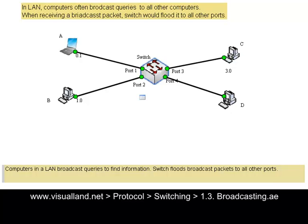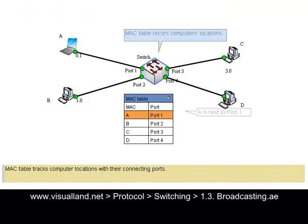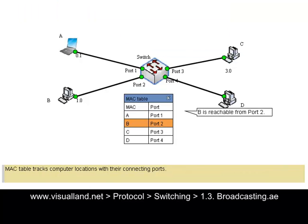Computers in a LAN broadcast queries to find information. A switch floods broadcast packets to all other ports. A MAC table tracks computer locations with their connecting ports.